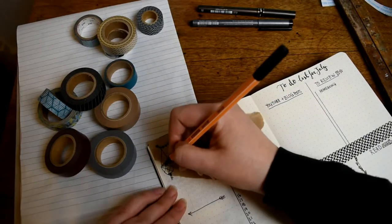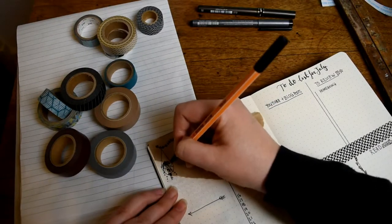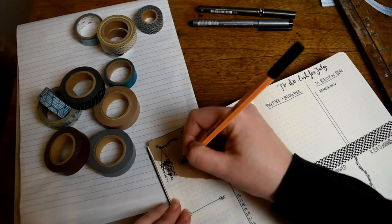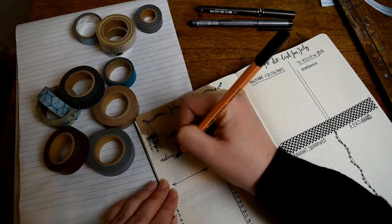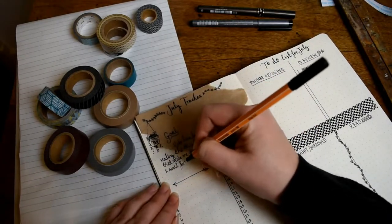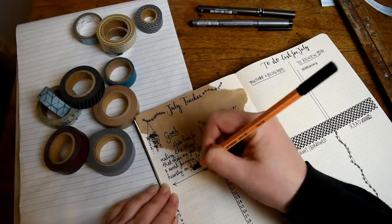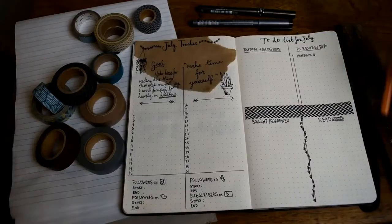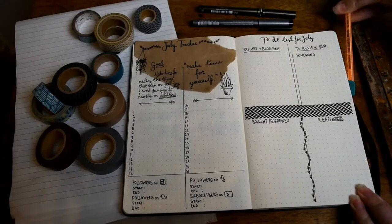I think it's impossible to have too many plants, so I added a couple of extra ones to this design. Now adding a goal for the month is a new thing for me that I'm testing out. This month I decided to set my goal as 'make time for reading the things that make me feel joy and avoid focusing too heavily on deadlines.'